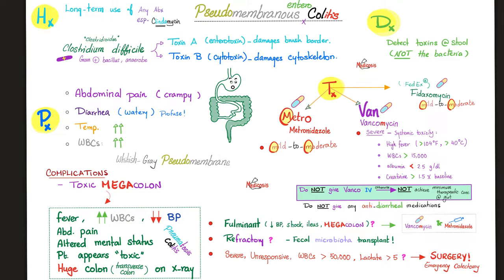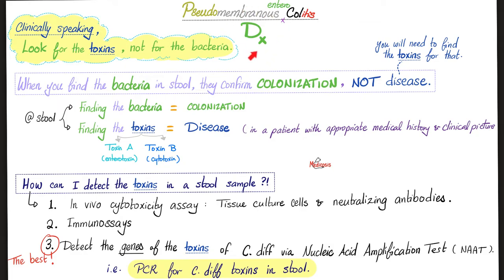How can we manage it? The three modes of transportation: the metro, the van, and the FedEx truck. When it comes to vancomycin, always use it orally for C. diff colitis — never give intravenous vancomycin if you're planning to treat C. diff colitis. Clinically speaking, we're looking for the toxins in the stool, not the bacteria. If you find the bacteria in the stool, that confirms colonization, not the disease. To confirm the disease, you need history, physical exam, signs and symptoms, and the detection of toxins in the stool.